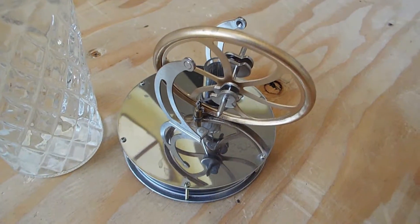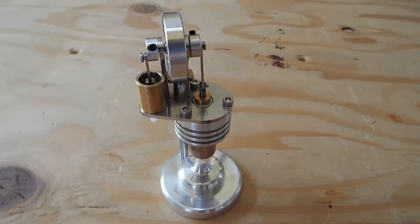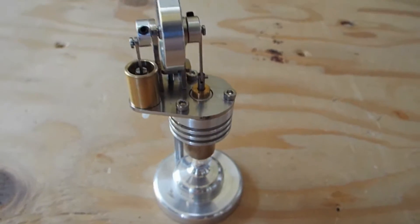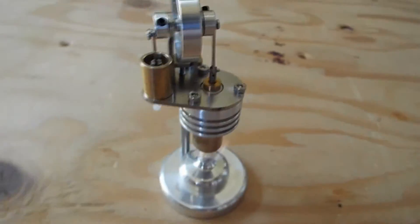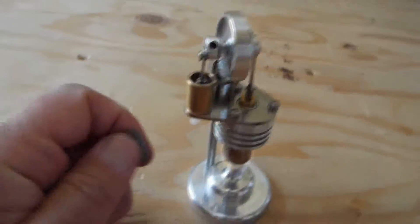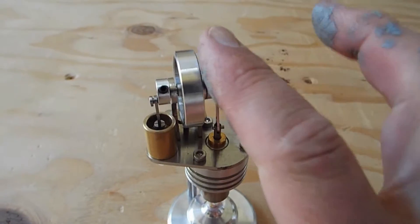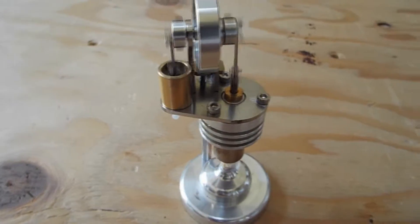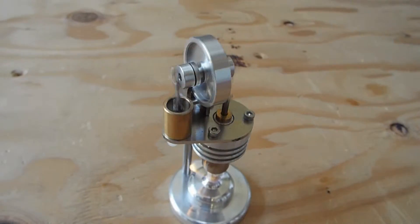On to the next one. This one's a little alcohol burner Stirling engine. And it's a tiny one. This one goes pretty fast. It burns alcohol on the bottom and gets pretty hot, so it spins pretty fast.